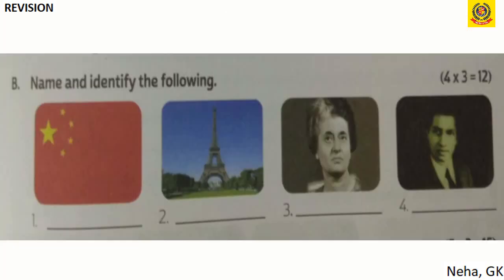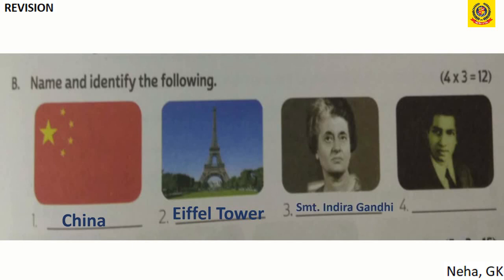Part B — Name and identify the following: the flag shown belongs to China; the picture is of the Eiffel Tower; the picture is of Srimati Indira Gandhi; and the picture is of Srinivasa Ramanujan.